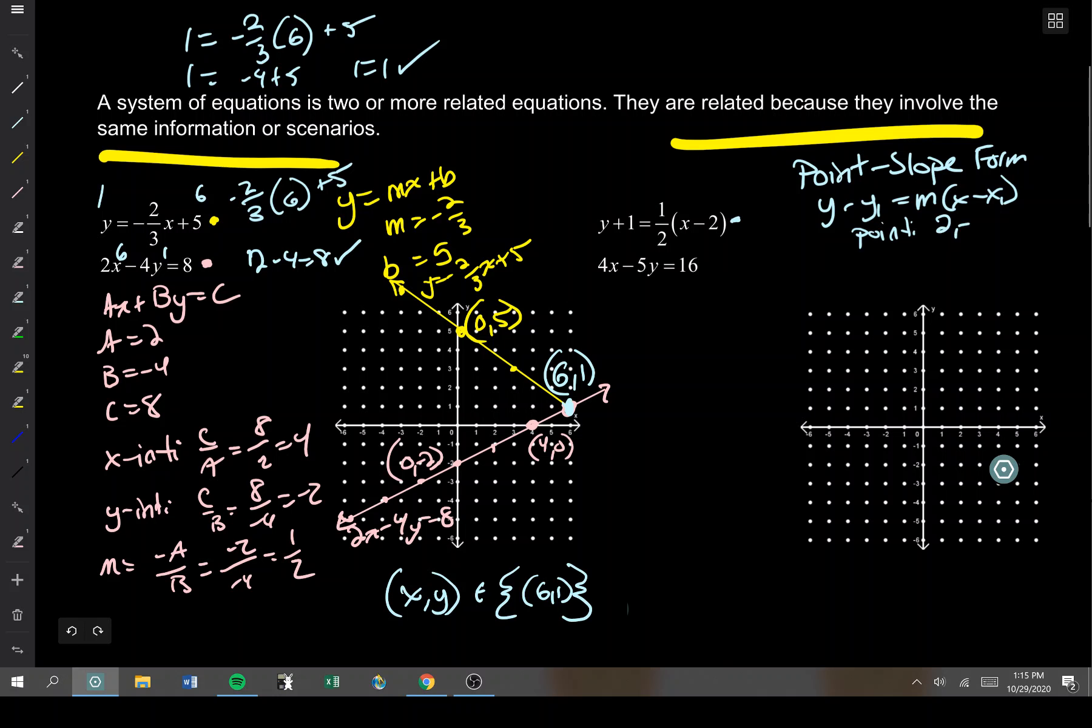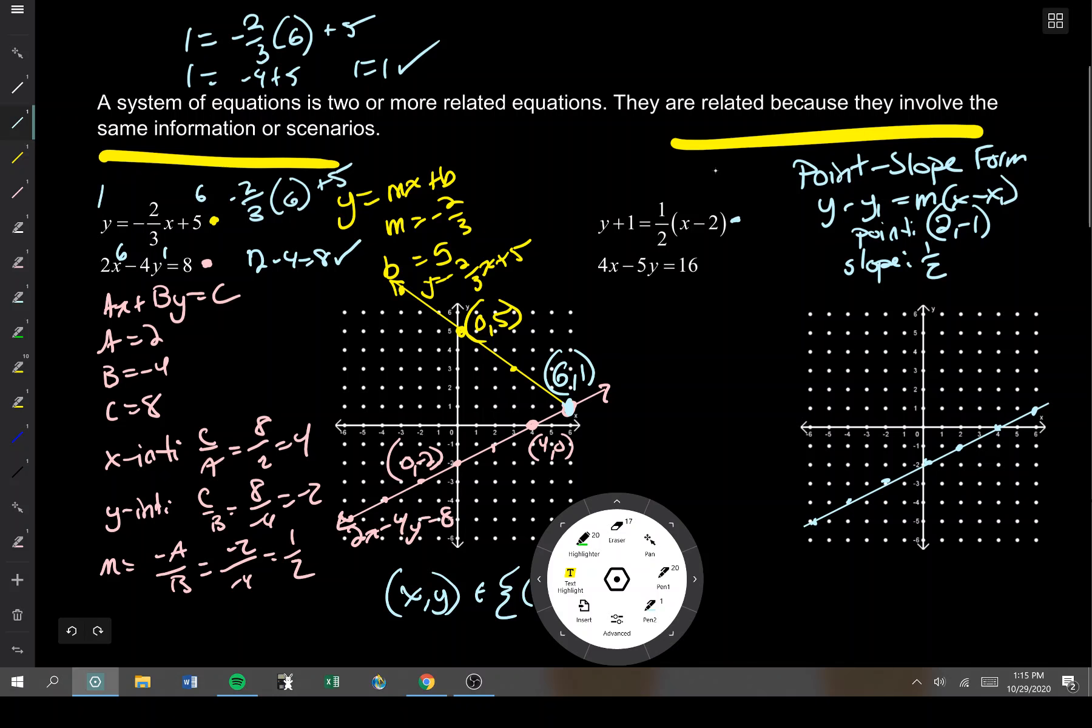The point that I have is 2, negative 1 and the slope of this equation is a half. So I'm going to go to the point 2, negative 1 and from there do a slope of up 1, right 2 or down 1, left 2. This is a slope of positive 1 half. So this is me graphing the line y plus 1 equals 1 half x minus 2. And that's a good line.